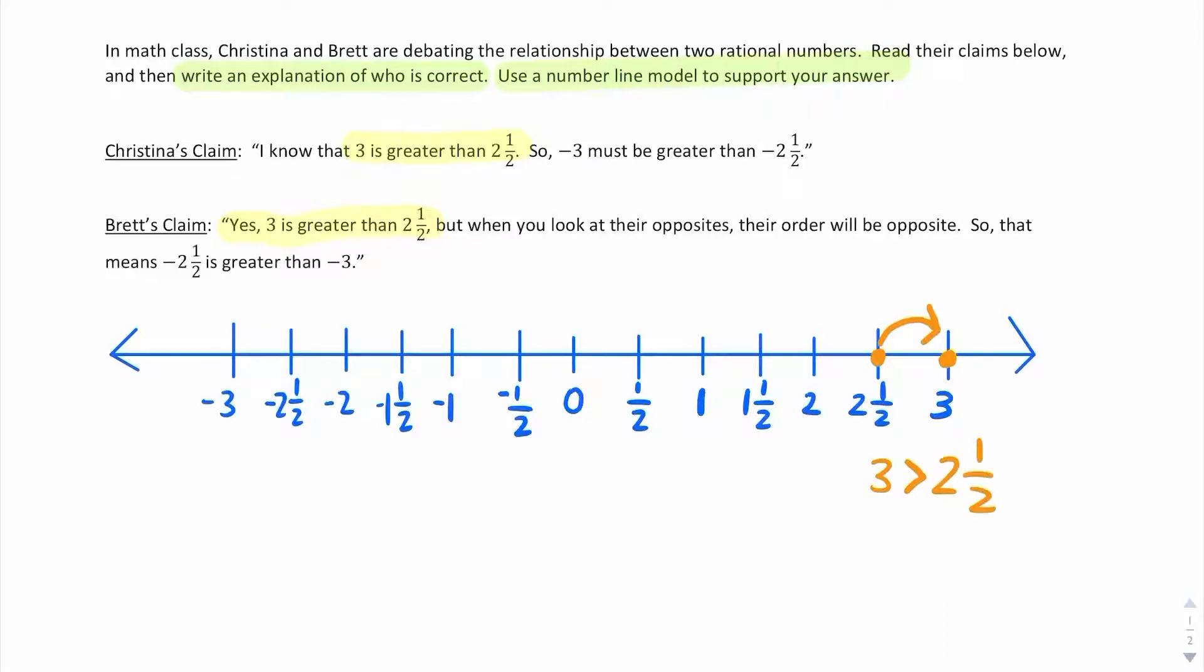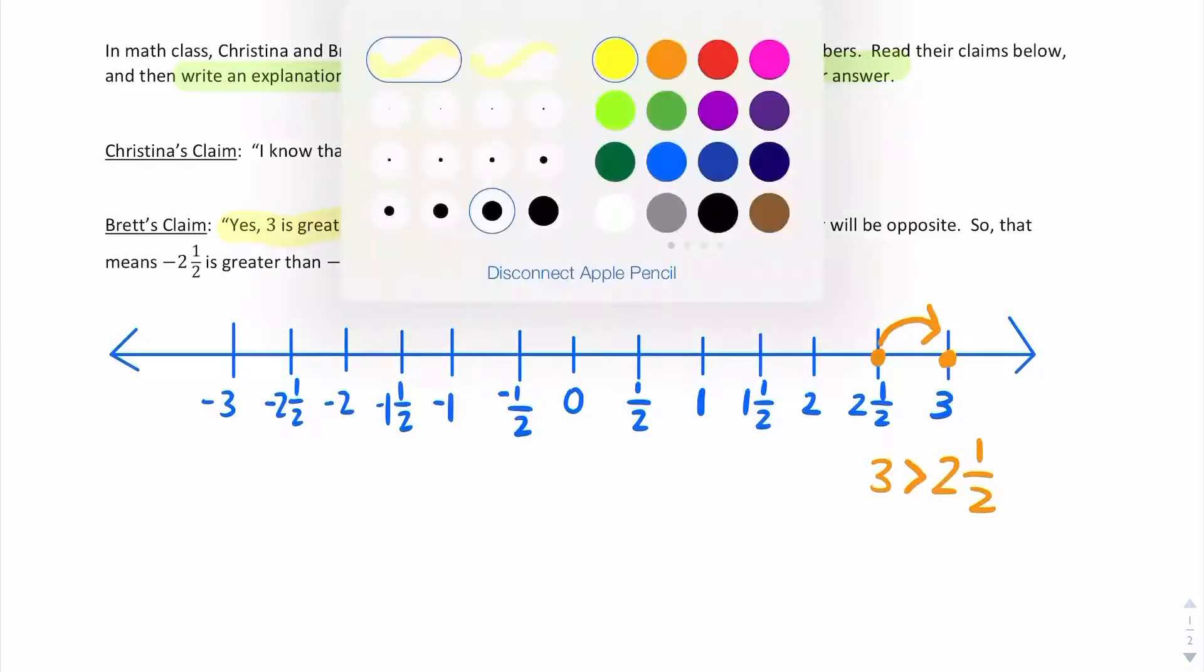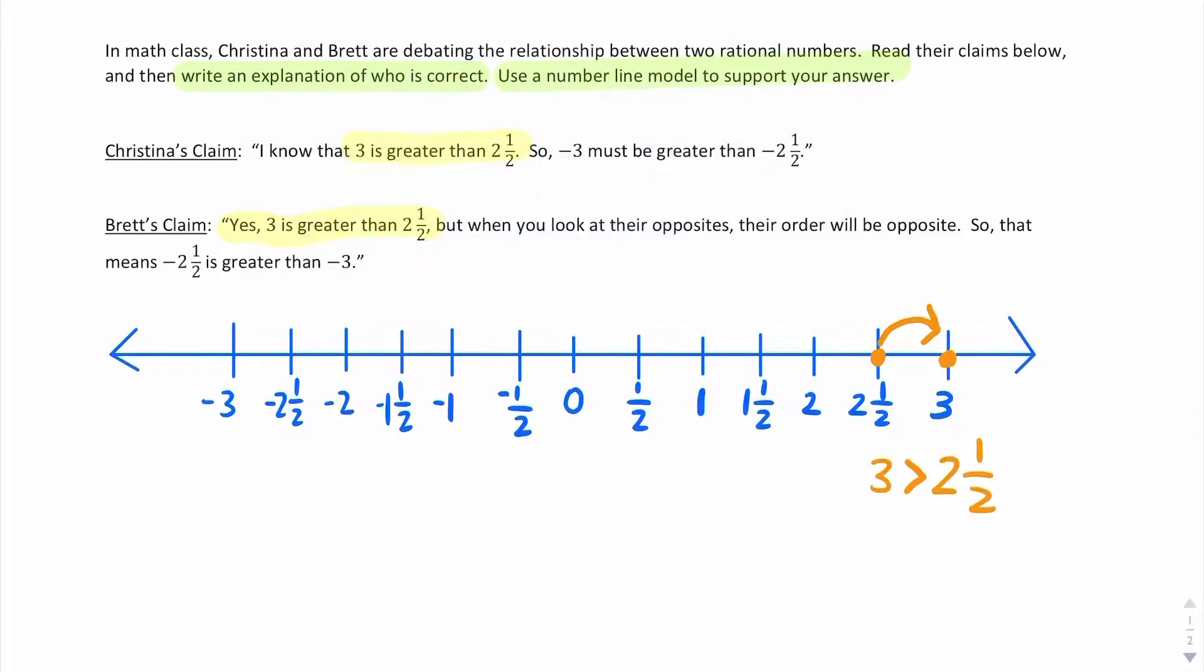Okay, so let's go to the next claim. Christina says negative 3 must be greater than negative 2 and 1 half. Brett says the order will be the opposite. So that means negative 2 and 1 half is greater than negative 3. Well, let's go ahead and take a look back at the number line. And here is negative 3 and here is negative 2 and 1 half.